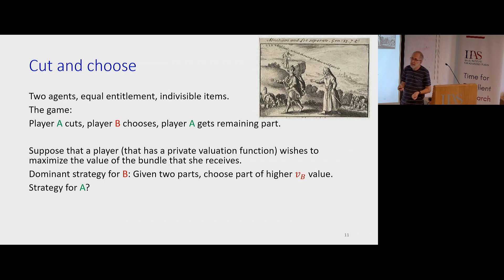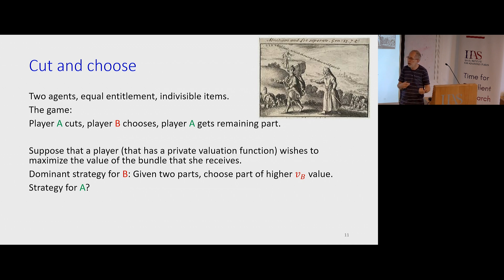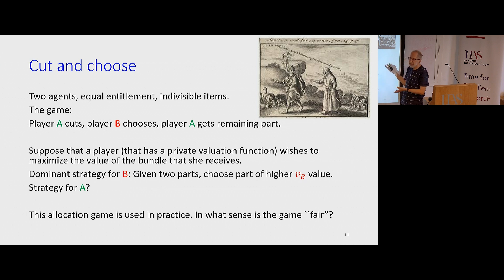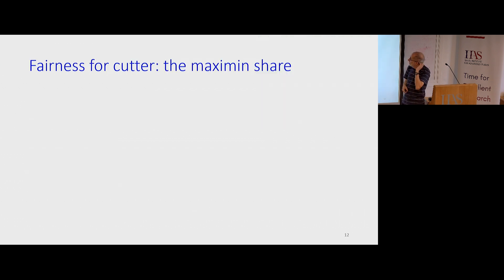What is the strategy for A? It's less clear because it depends on what B would do — if you cut one way, B chooses a part and leaves you something of potentially high value, but we don't know how B will react. This allocation game is used in practice — when people cut a cake, often one cuts and the other chooses. In what sense is this game fair? We use this game as a way of introducing classes of fairness notions.